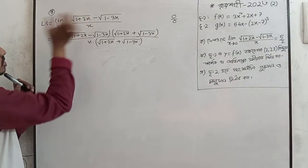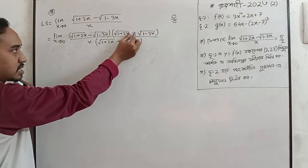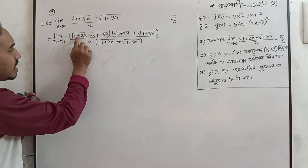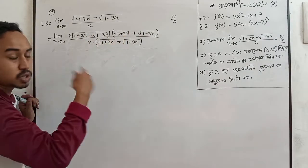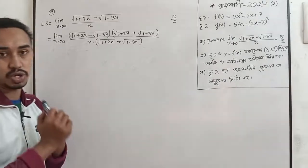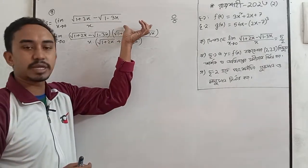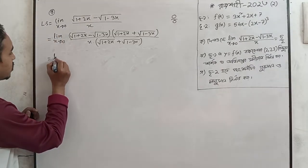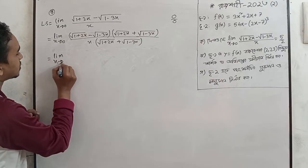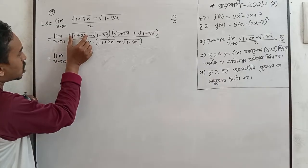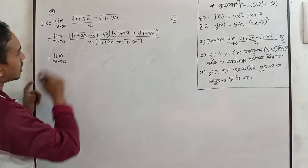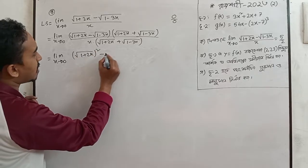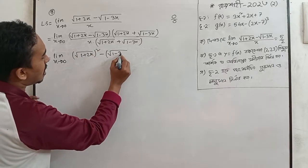I have two values: 1 plus 2x plus root over 1 minus 3x. So we will add the conjugate. Using the identity a minus b times a plus b equals a squared minus b squared, we apply limit x tends to 0. So we make this A plus B and A minus B, then A squared minus B squared gives us 1 plus 2x minus 1 minus 3x.